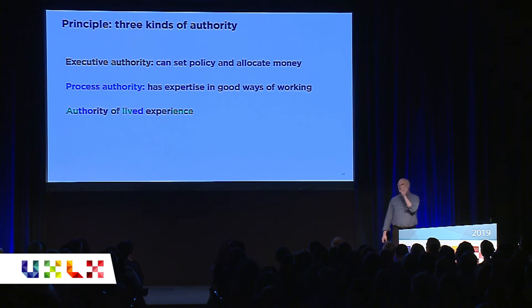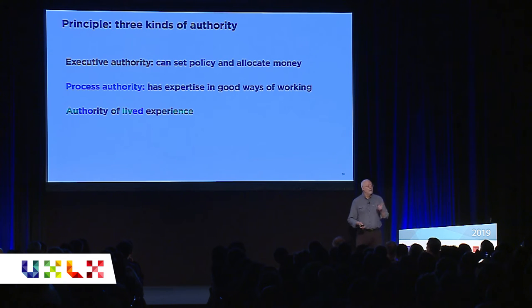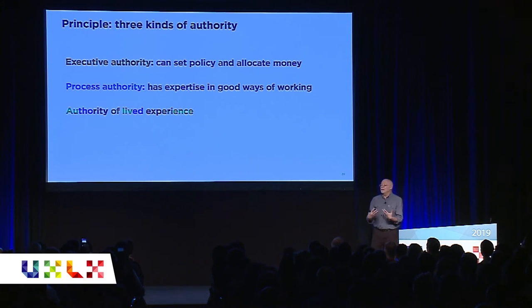They decided that a good practice run would be the easier — but still very difficult — challenge of taking on the dysfunctional social life on campus, which emphasizes heavy drinking. Can we shift that pattern? Power always comes up in these things. We find it useful to say: executive authority — people who have money, can make decisions, set policy; process authority — people who can help move the work along; and the authority of lived experience — people who live the current situation and will live the future situation. If we think of those as three peer authorities, our conversation changes.